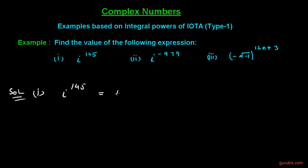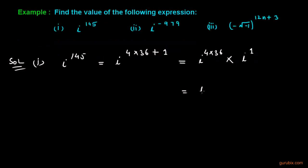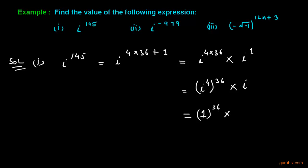We can write 145 as 4 times 36 plus 1, or we can write it as iota raised to (4 × 36) into iota raised to 1, which is iota raised to (4 × 36) into iota. We know that iota raised to 4 is equal to 1, so this becomes 1 raised to 36 into iota, and 1 multiplied N times gives 1.